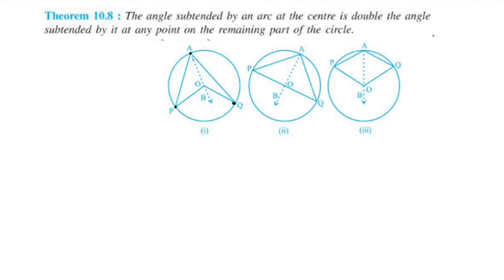The angle subtended by any point on the circle is double at the center. For example, this angle is 30 degrees, and the angle at the center is double, so it is 60 degrees. We have 3 cases: arc PQ is minor, arc PQ is a semicircle, and arc PQ is major.